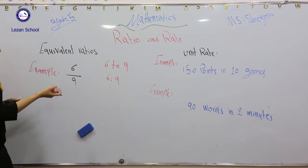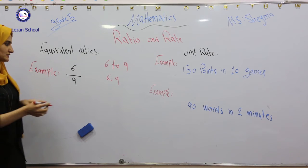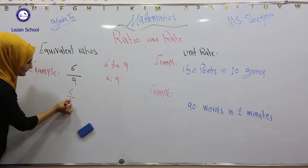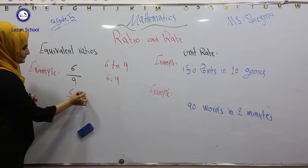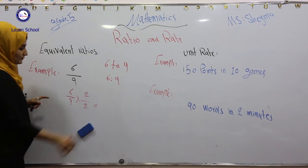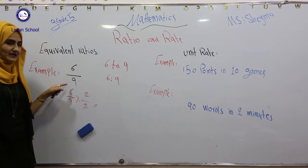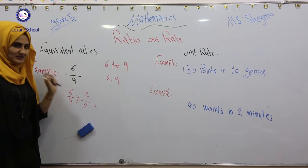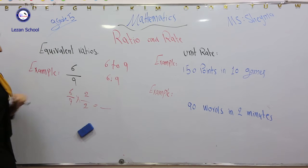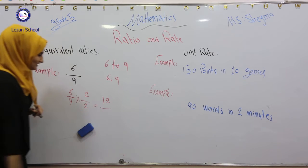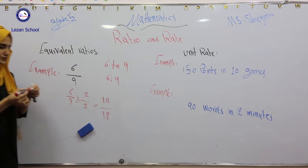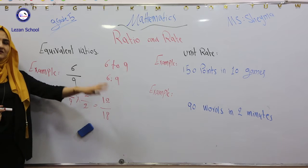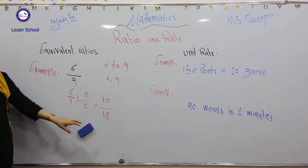First, we have to find the equivalent ratio by multiplication. 6 over 9 times any number as you like. So multiply 2 over 2. But if we multiply this number by any number, we should multiply the denominator by the same number. We have 6 times 2 equals 12. 9 times 2 equals 18. So 12 over 18 is an equivalent ratio with 6 over 9.